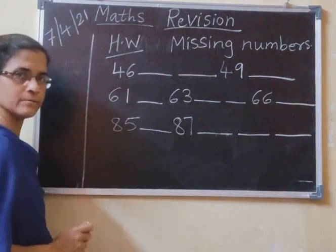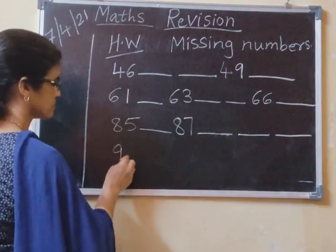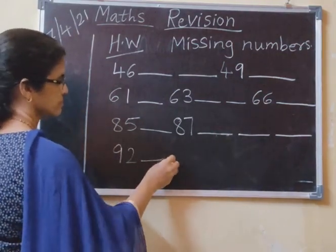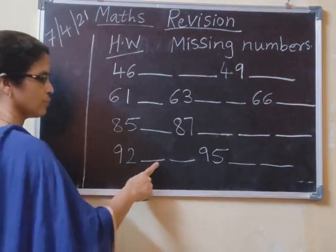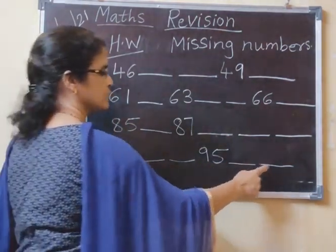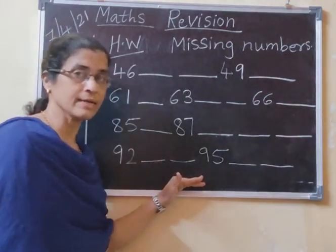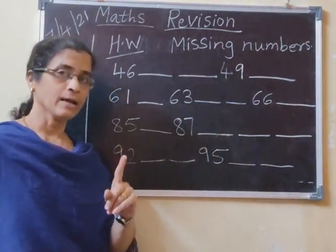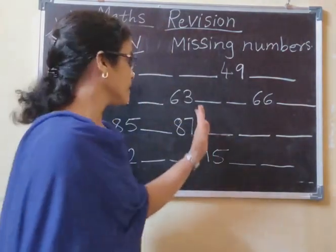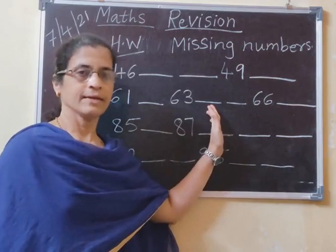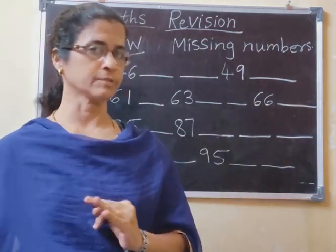You have to leave one line, okay? 92 dash, dash, 95 dash, dash. This is your homework. Students, you have to complete and send it. Parents, you have to send it. This covers missing numbers, tables, and addition sums. These three you have to complete and send.